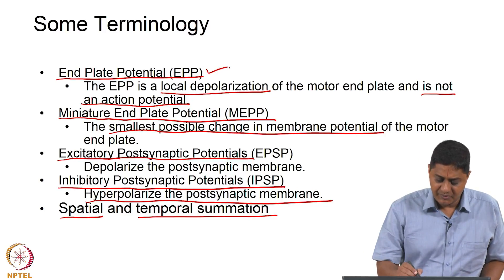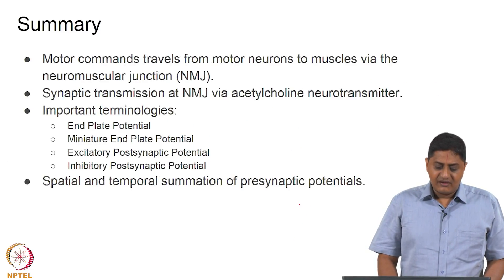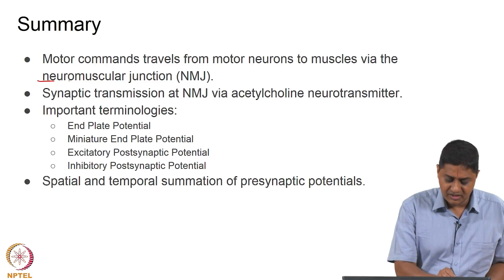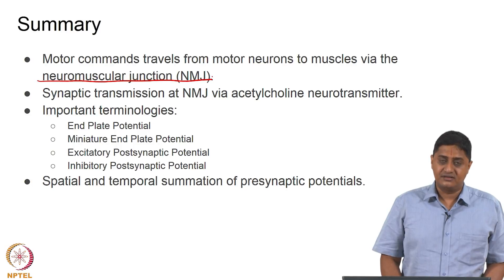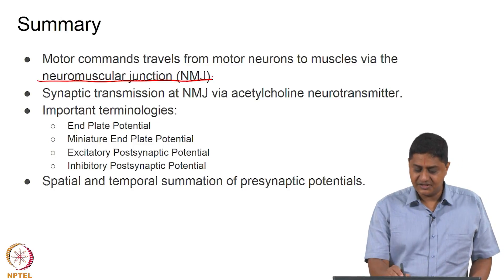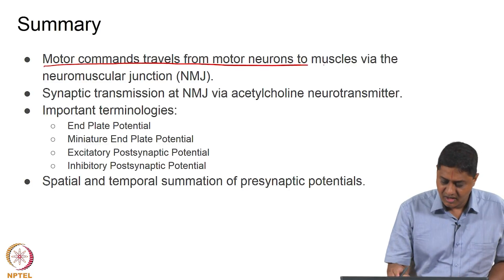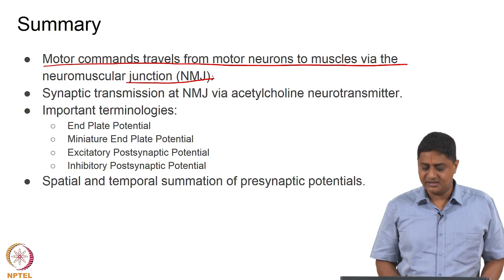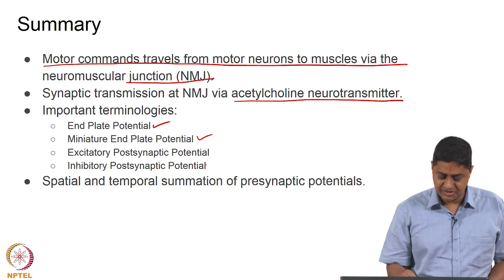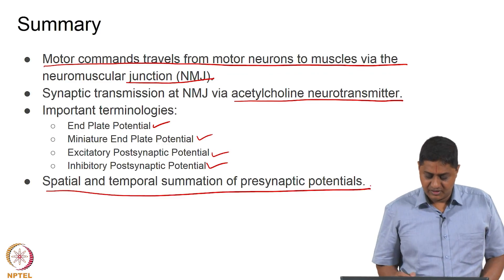In summary, we have seen end plate potential, miniature end plate potential, EPSP, IPSP, and spatial and temporal summation. Motor commands travel from motor neurons to muscles via the neuromuscular junction, which is mediated by the neurotransmitter acetylcholine. How acetylcholine causes this — synaptic transmission at the neuromuscular junction via acetylcholine — we have seen in relatively greater detail. Motor commands reach the muscle via the NMJ, mediated by acetylcholine neurotransmitter.